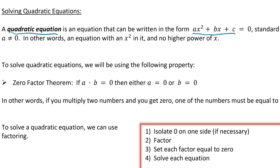To solve these we're going to be using factoring. In order to factor these and solve them, we're going to talk about the zero factor theorem. The zero factor theorem says if a times b equals 0, then either a equals 0 or b equals 0. Essentially, if you're multiplying two numbers and you want them to equal 0, one of those two numbers has to be 0.